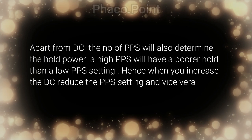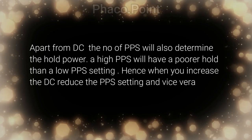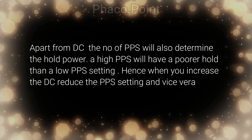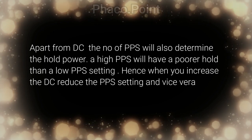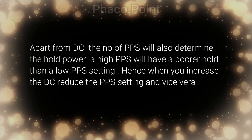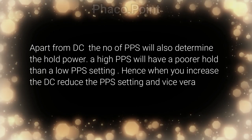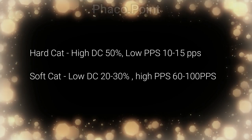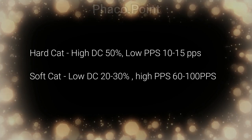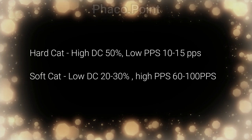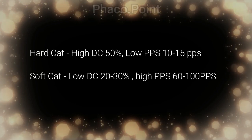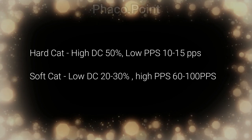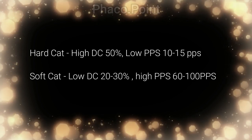Apart from the duty cycle, the number of pulses per second will also determine the holding power. A high pulse per second will have a poorer hold than a lower pulse per second setting. Hence, we need to balance the duty cycle and the pulses per second settings. When you set the duty cycle high, you generally go for a lower pulse per second — this is done in hard cataracts. When you set the duty cycle low, you usually combine with a high pulse per second, which is much more efficient in softer cataracts.